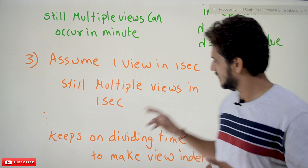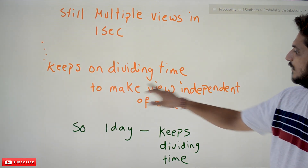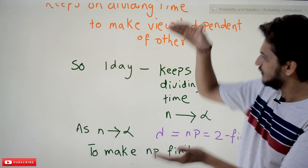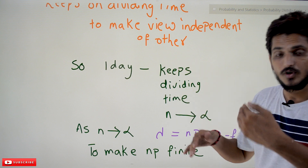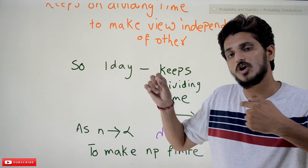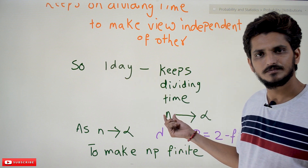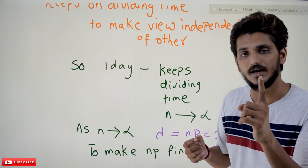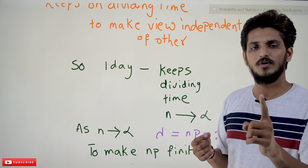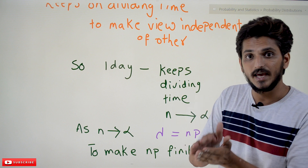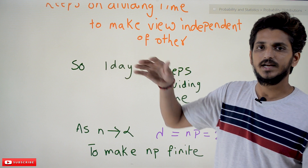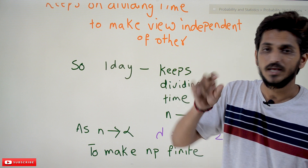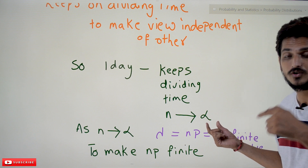That's why, if you keep on dividing time to make views independent of each other, and in one day you keep dividing the time smaller and smaller — say one view in 0.001 second — what is the possible value of n? You can have one event per tiny interval, and if you keep on dividing like that, n goes to infinite. That's why n is going to infinite: because in Poisson's distribution they have not provided n, they have provided the lambda value. We are assuming n, and there is no limit — n keeps on going, n is tending to infinite.